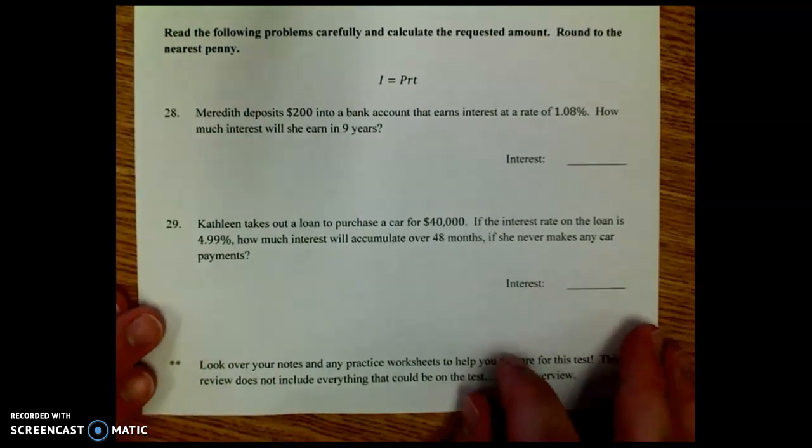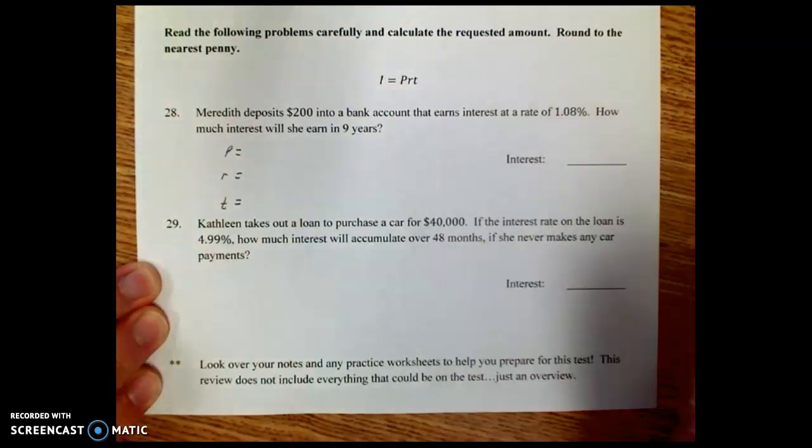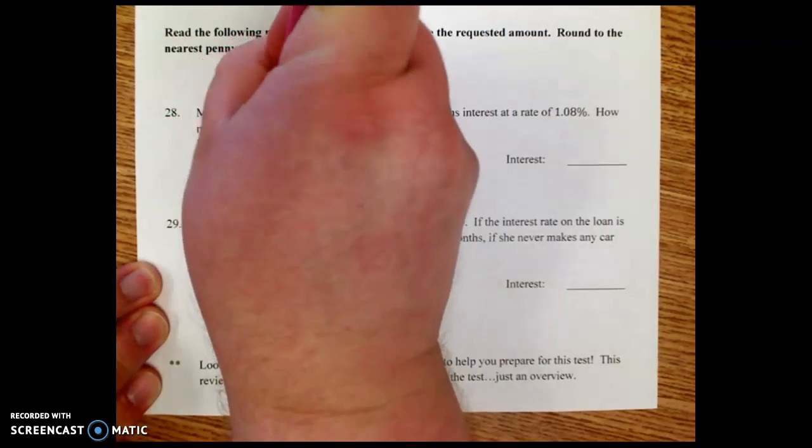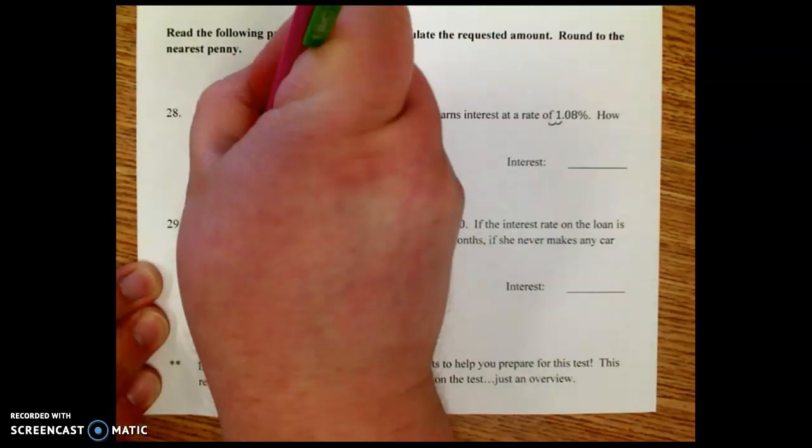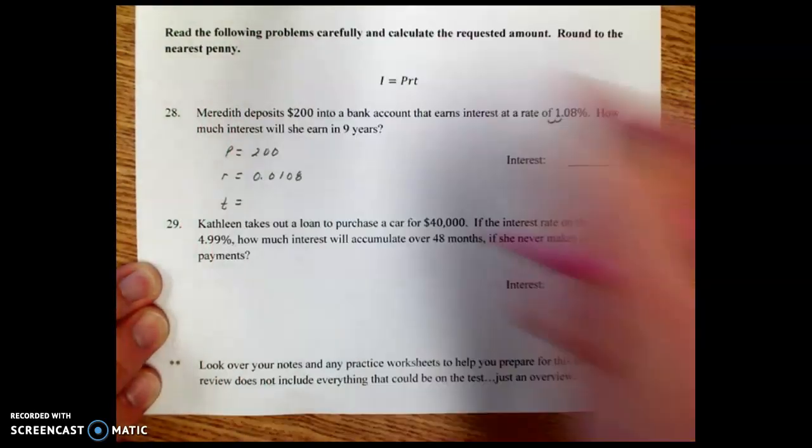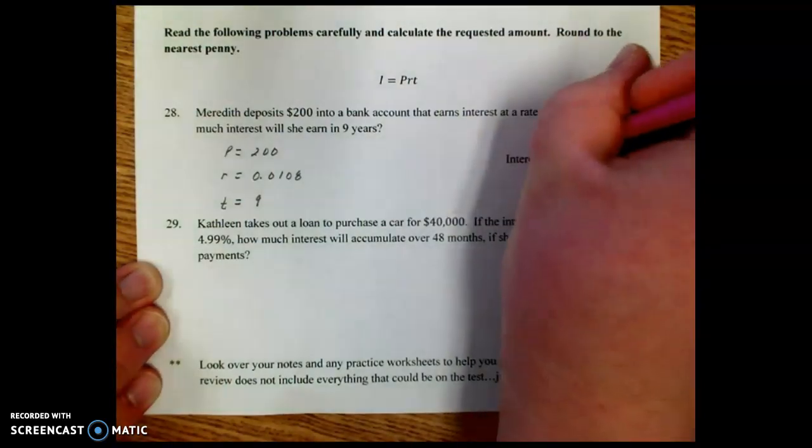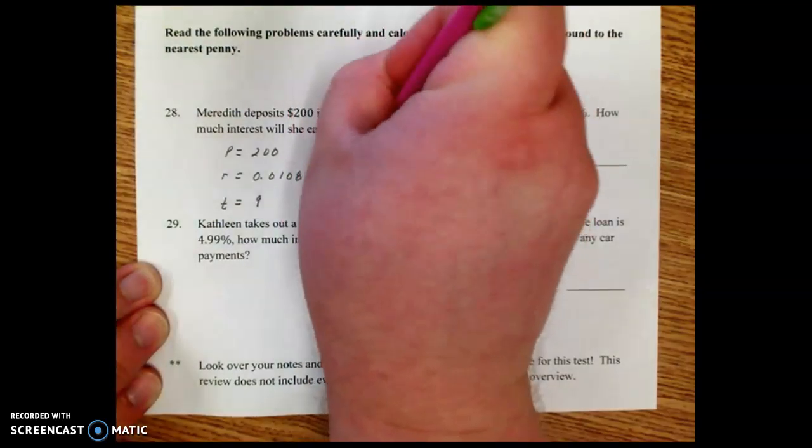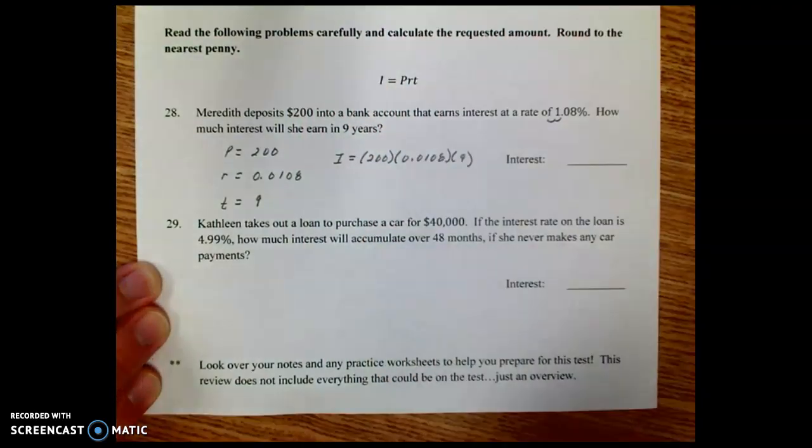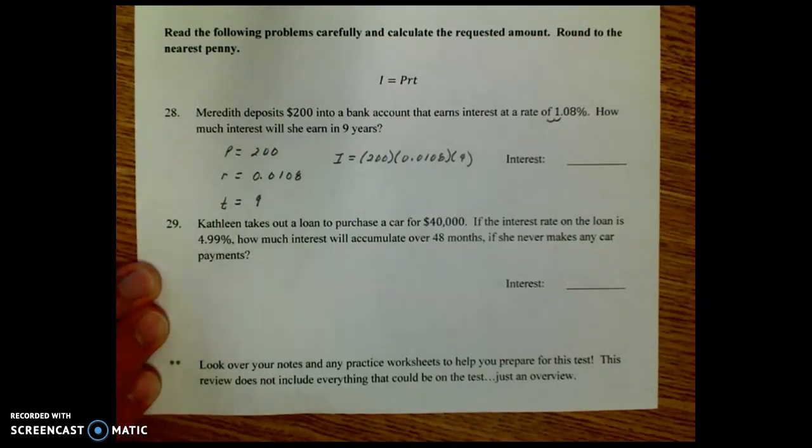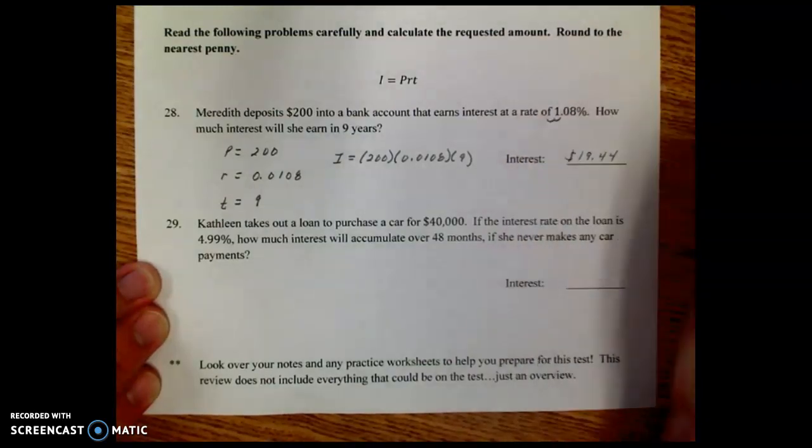So interest, we use the formula I equals PRT. I always make a list on the side. P, R, and T. Principal is the starting amount. She deposits $200 into the bank. The rate is 1.08. We scoot that over two places. That'd be 0.0108. And the time is nine years. So we just need to find the interest. So we're going to plug it into the formula. P times R times T. And if we do that, we get $19.44.